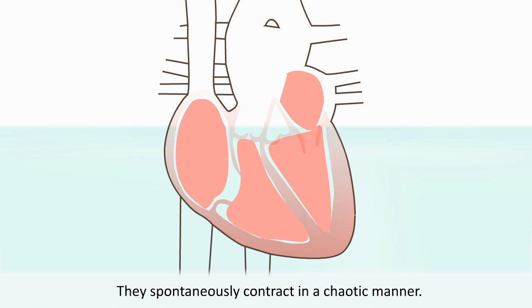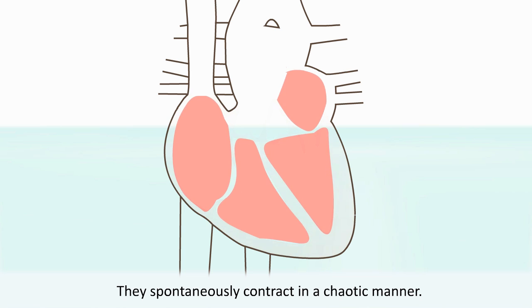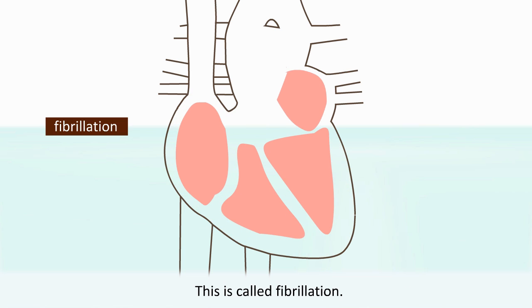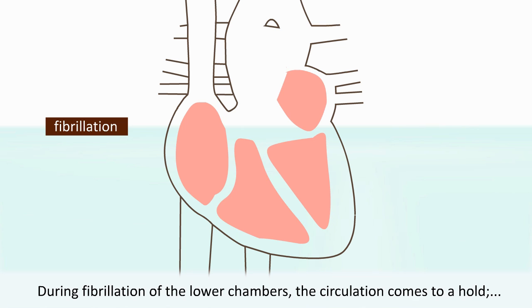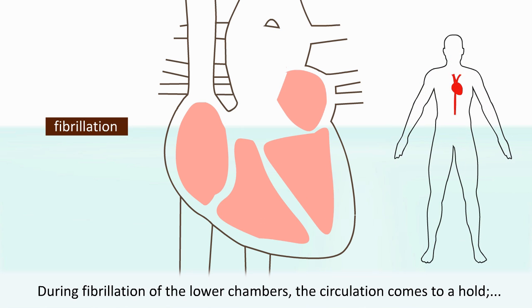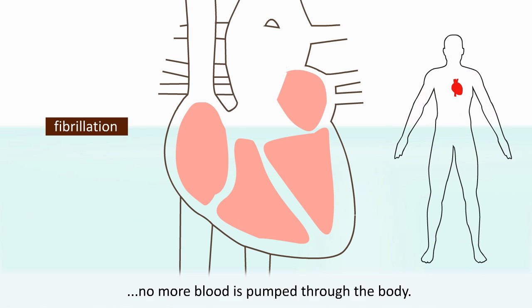They spontaneously contract in a chaotic manner. This is called fibrillation. During fibrillation of the lower chambers, the circulation comes to a halt. No more blood is pumped through the body. This is a life-threatening situation.